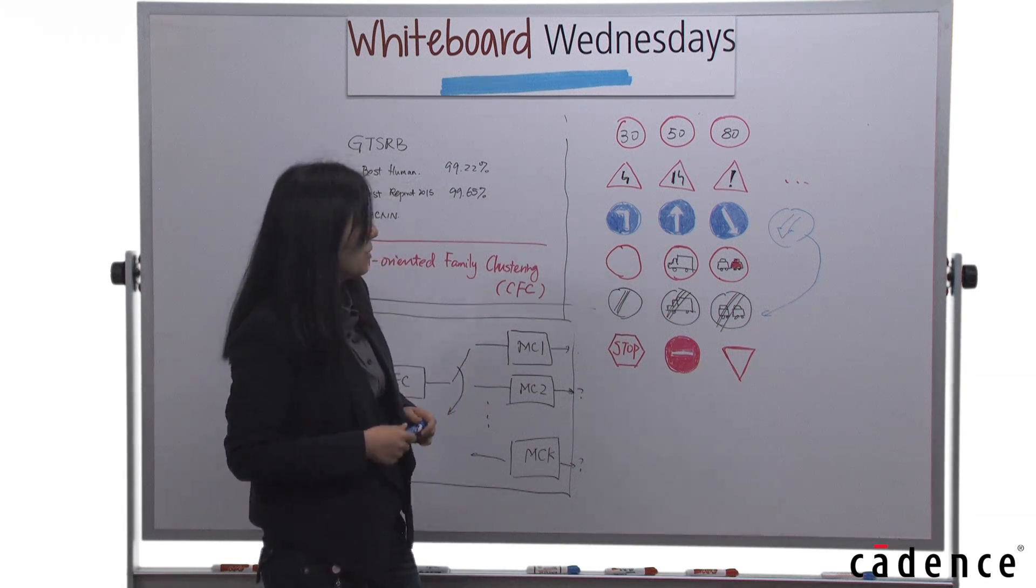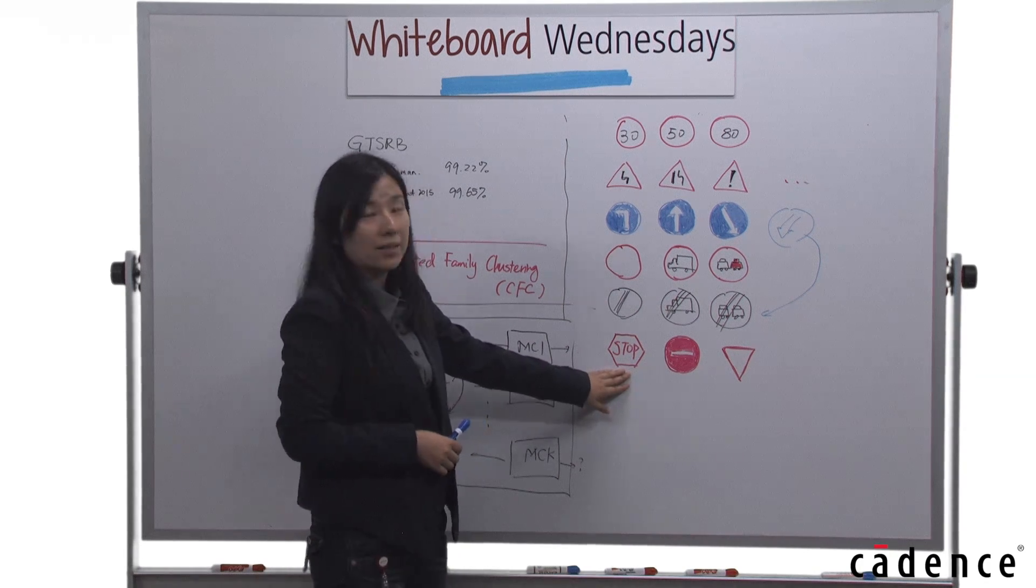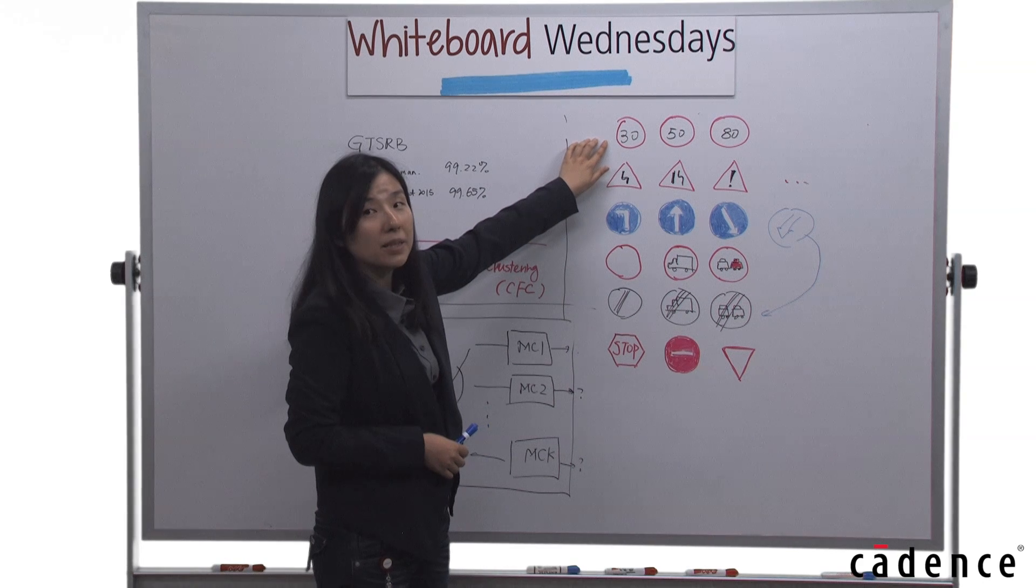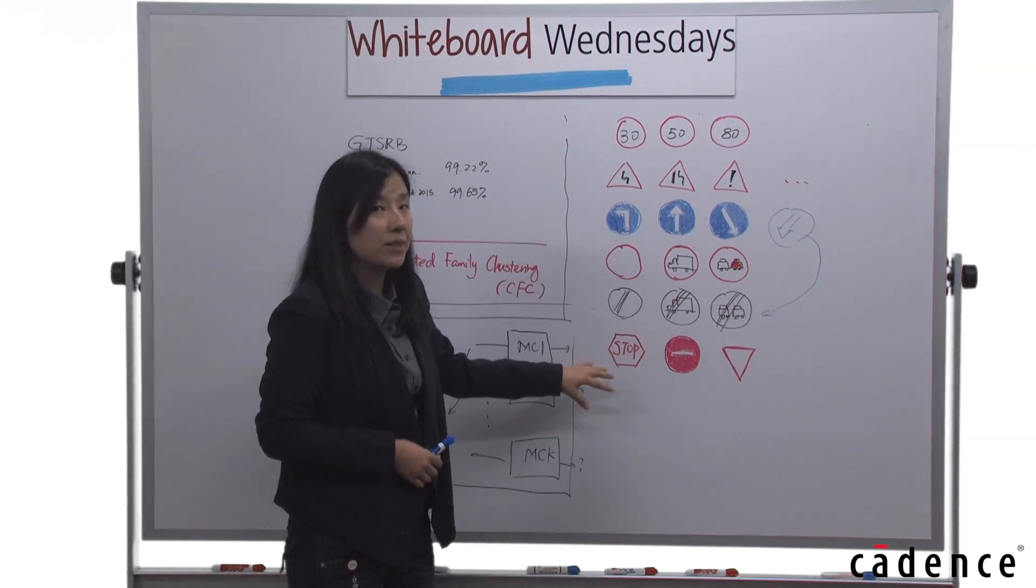Another thing to note is that the CNN moves the stop sign into the speed limit family because it sees it as a round circle with something in between.